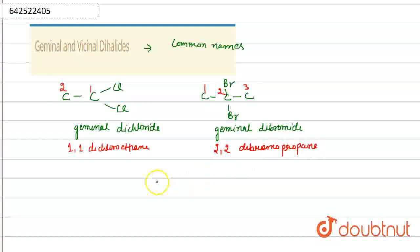Okay, so these are the examples of Geminal Dihalides. In case of Vicinal Dihalides, when halides are arranged on the adjacent carbon, these are known as Vicinal Dihalides. Like here, these are present on the adjacent carbons.